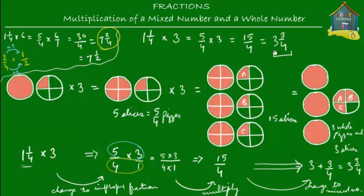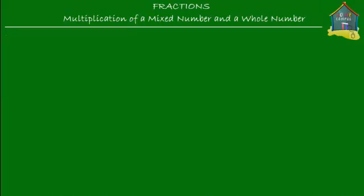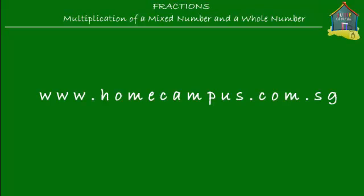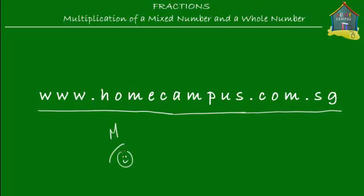In the first case, you got 3 and three-quarters and stopped there because three-quarters couldn't be simplified further. But in some cases you can simplify the fractional part of the mixed number, and in those cases you must put the fraction in its simplest form. That's all for this lesson. For practice exercises, visit www.homecampus.com.sg. Practice makes you perfect!